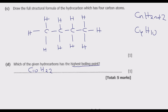If you are to name C10H22, it is called decane, because the prefix 'dec' means 10, referring to the 10 carbon atoms. So C10H22 has the highest boiling point. This is basically how you answer this question to get the 5 marks.